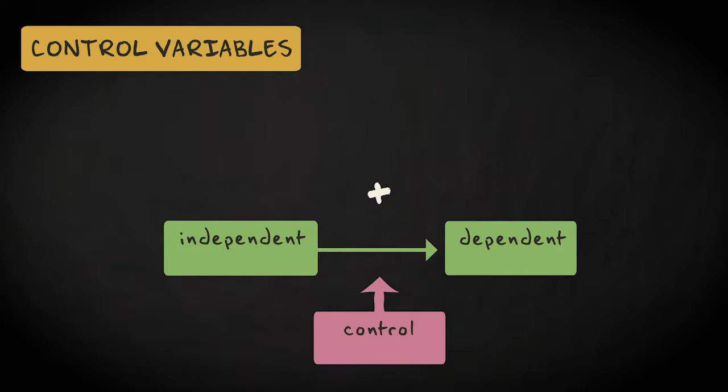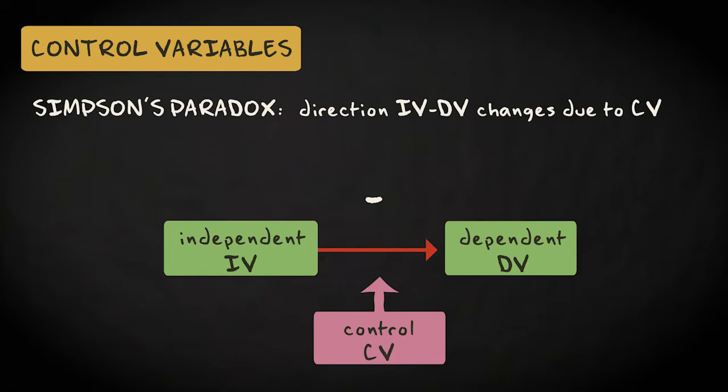The relation between the variables of interest can change drastically when taking a control variable into account. It's even possible for the relation between the variables of interest to reverse completely. We refer to this phenomenon as Simpson's paradox.